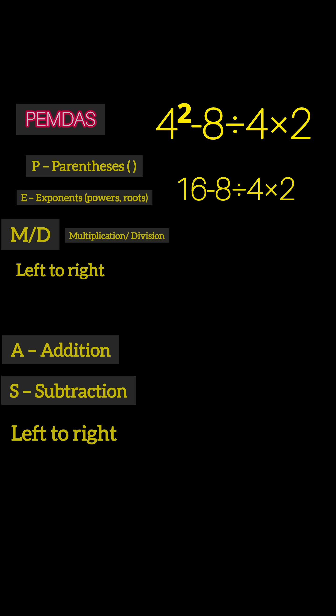Now handle division and multiplication from left to right: 8 ÷ 4 = 2, then 2 × 2 = 4. Finally, subtraction: 16 - 4 = 12. That's the correct answer: 12.